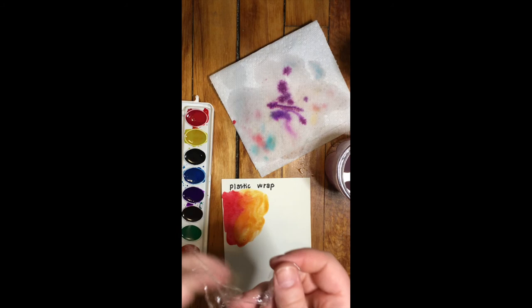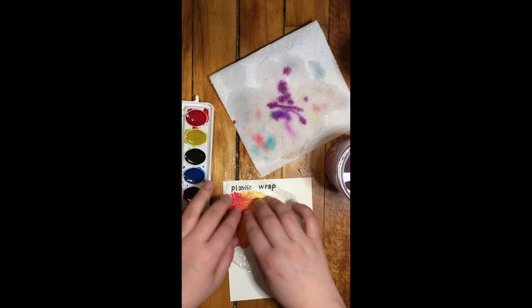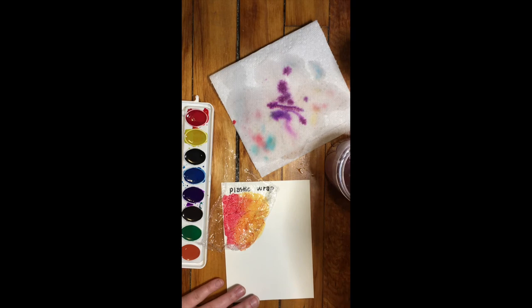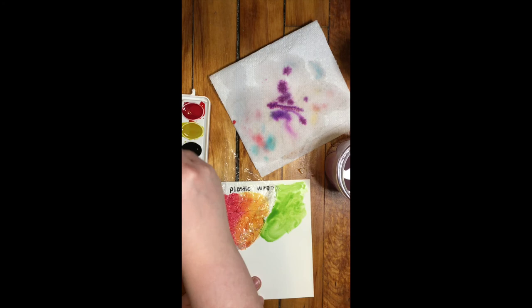So I'm going to take my plastic wrap and rip a little piece off of it. And you're going to lay it on top of your paint and just move it around a little bit. And you can tell it starts to make some cool shapes in there. So once you have it on there, don't touch it again. Leave it on there until it's completely dry.